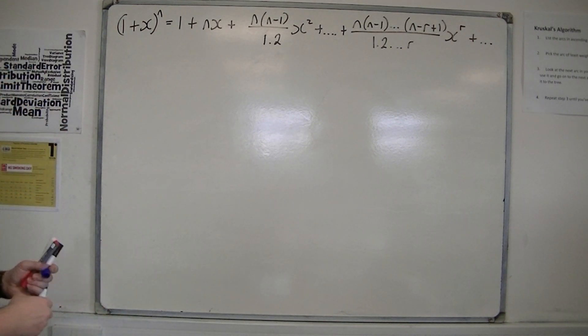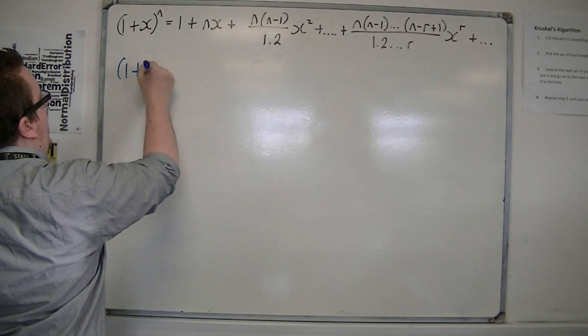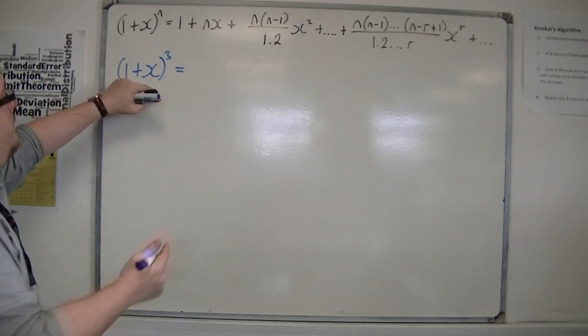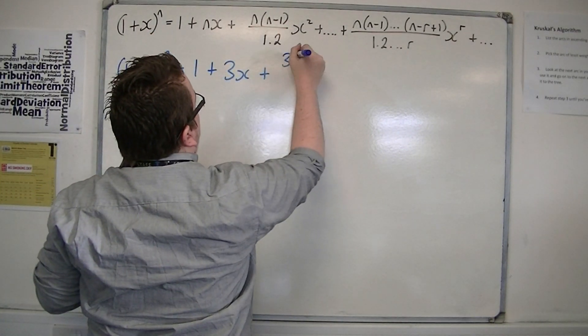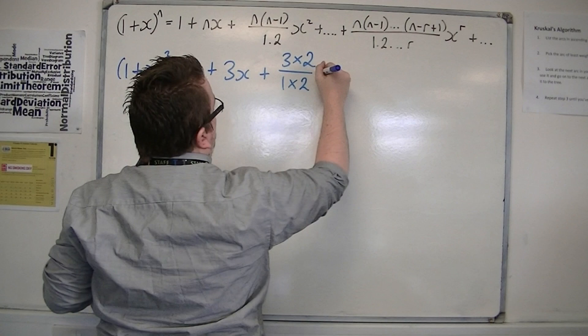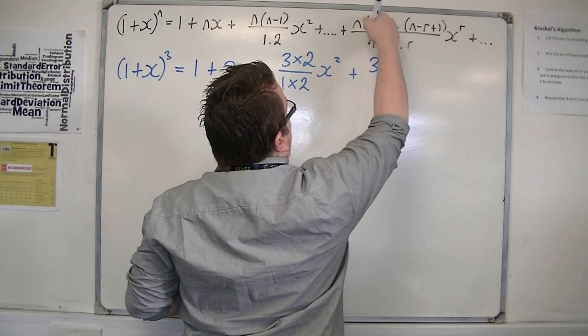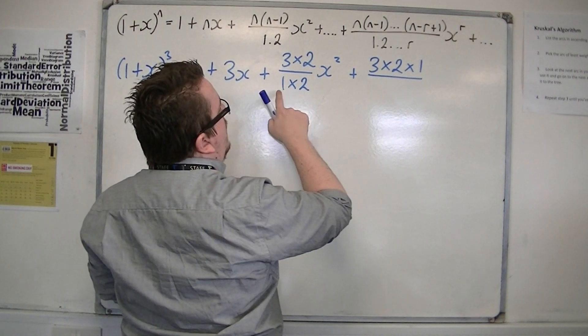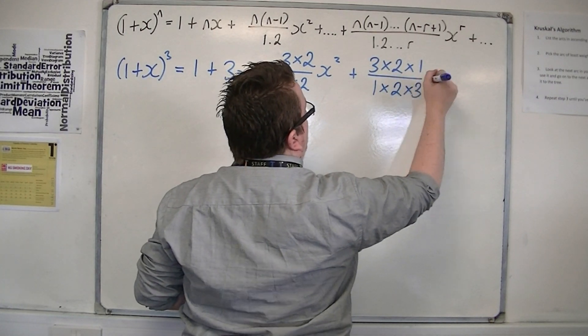Now actually using this is perfectly fine. Because what we can do is we can still use it to expand something like (1 + x)³. So if I do that, then n is 3. So I have 1 + 3x + 3 times (n - 1), so that's 2, over 1 times 2, times x², plus 3 times 2 times 1 over 1 times 2 times 3, x³.